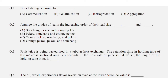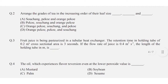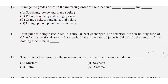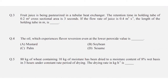Question number three is a numerical answer type — there will be no negative marking. The answer is 5.9 to 6.1. For question number four, the oil which experiences flavor reversal even at a lower peroxide value — option B is correct: soybean.